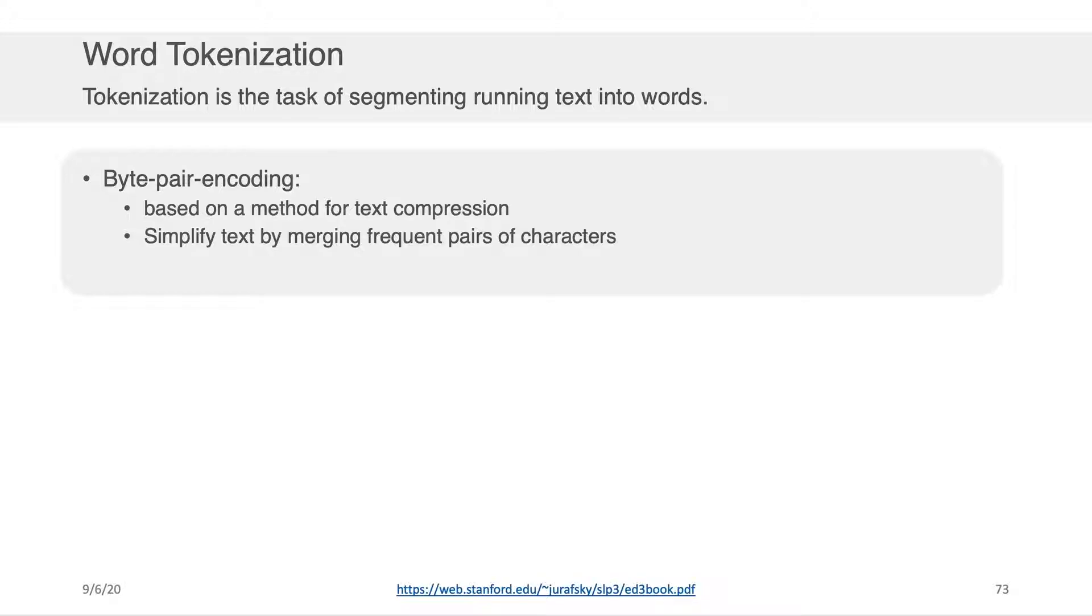Byte-pair encoding is based on a method for text compression, and it creates a vocabulary of tokens by sequentially merging frequent pairs of characters together. So I think the right way to understand this is by means of an example. The example that I'll be using is coming from a textbook that was published by some faculty members out of Stanford University. I've put a link to the textbook there at the bottom of the slide in case you'd like to read more about this example on your own. Okay, so let's step through it.